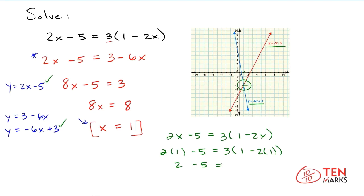And then you have to use the distributive property. Actually, let's simplify the parentheses first. 3 times 1 minus 2 times 1 — and 2 times 1 is 2 — so 1 minus 2, which is negative 1. Now simplify the left by subtracting: 2 minus 5 is negative 3. And 3 times negative 1 is negative 3, so you get a true equality, which means your solution is correct.